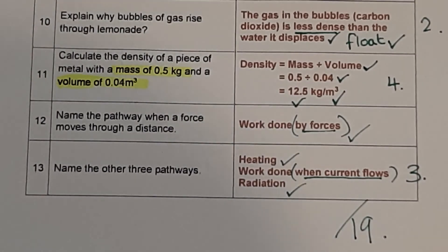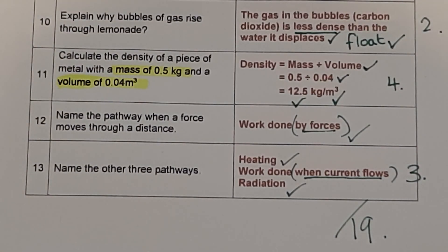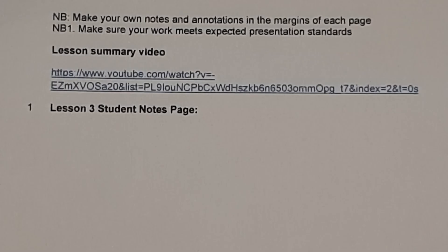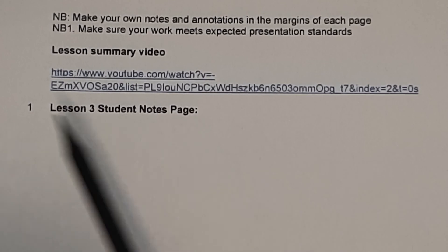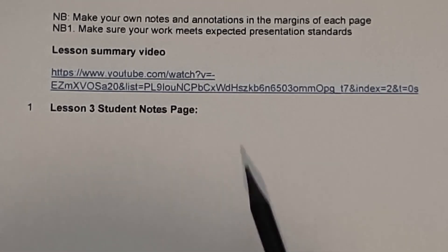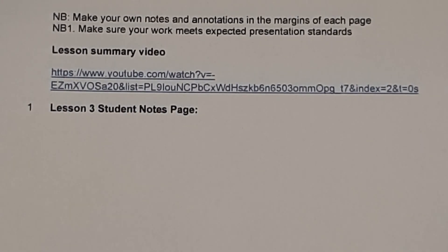If you've got more than 16, that's really well done. If you have less than 10, you need to have another go. Before we finish, please look at the lesson summary video on YouTube — the link is provided. If you have a digital copy of the book, you can just click the link. It's a good way to review and summarise the lesson content. That's the end of our lesson — if you have any questions, please email your teacher for support. Thank you very much.